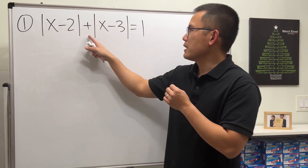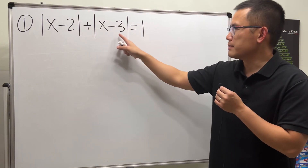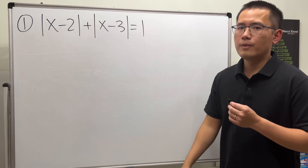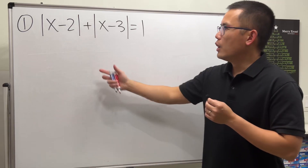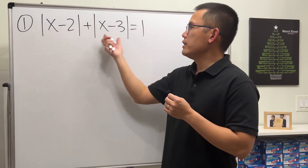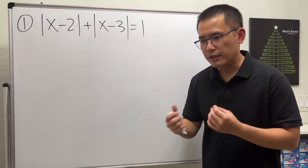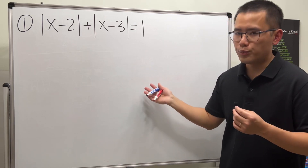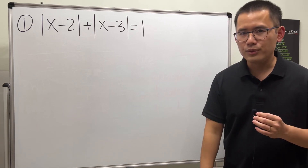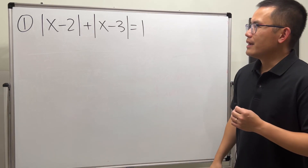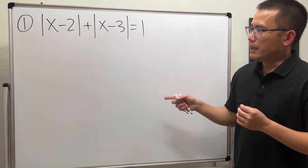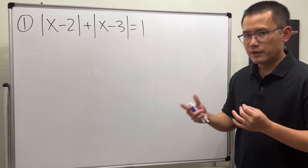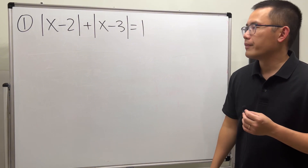Absolute value of x minus 2 plus absolute value of x minus 3 is equal to 1. Of course, we can take away the absolute value, but we will have to break down two cases and then solve it algebraically — I'm going to leave that to you. It would be better in this situation to use the definition of absolute value to help us out.